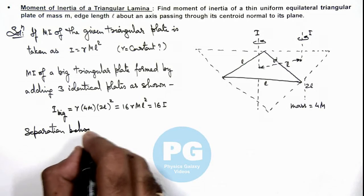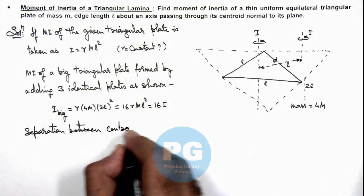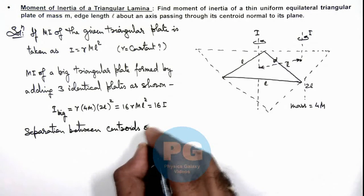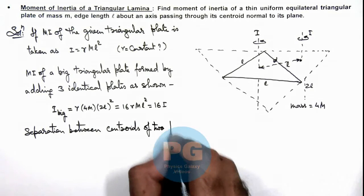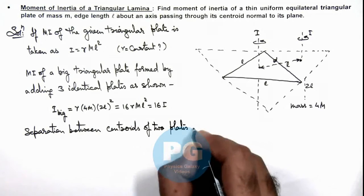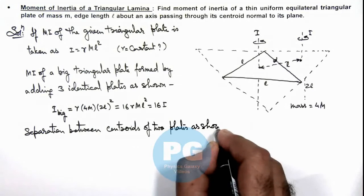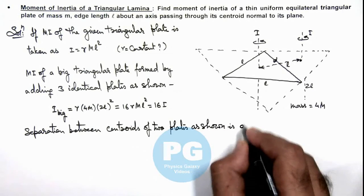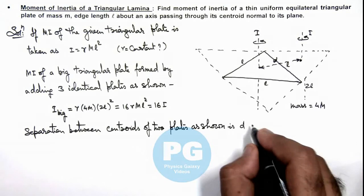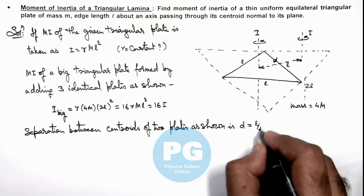Then we can calculate the separation between centroids of two plates as shown, is written as d. And the value of d will be l by root 3.